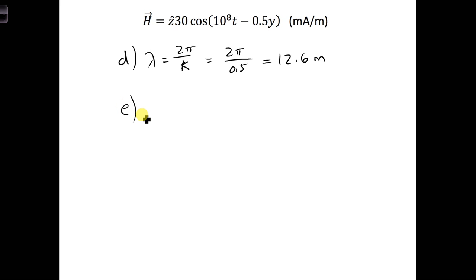And then for Part E, we want the relative permittivity of the material. And so we can look back on what we solved for previously to see if we can use those values to solve for the permittivity of the material.